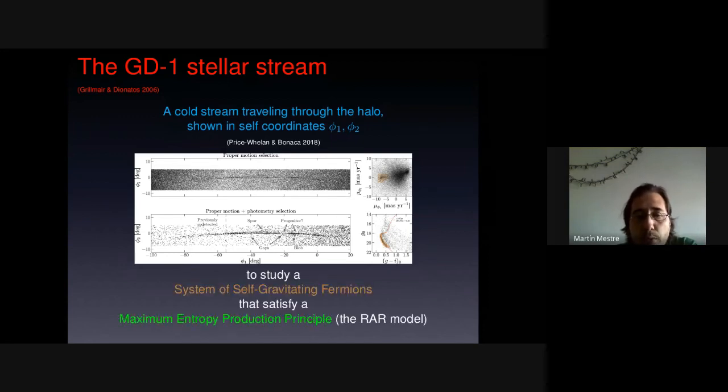So we will use the GD1 stream to study a system of self-gravitating fermions that satisfy a maximum entropy production principle, which is the RAR model.